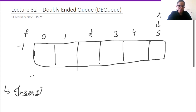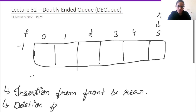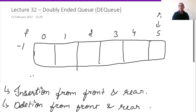So in a doubly ended queue, we have insertion from front and rear, as well as deletion from front and rear.